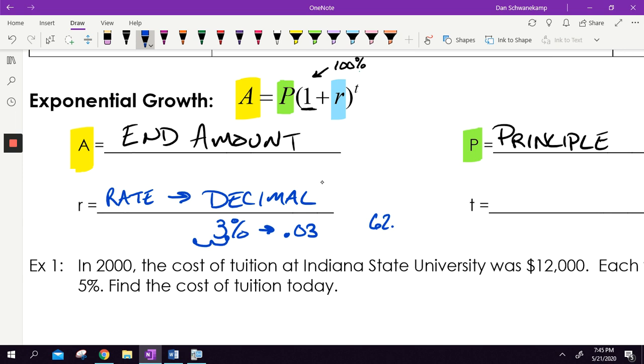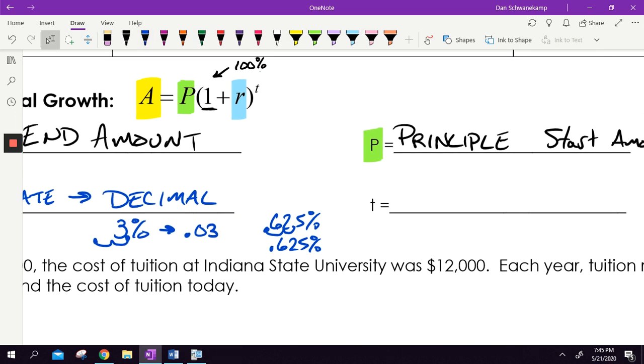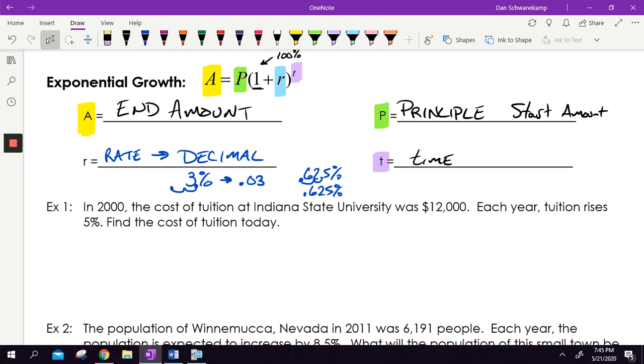So 3% when we do these problems, fill it in as 0.03. If you had like 62.5%, you would move it 1, 2. It would be 0.625. So just be aware of that. Make sure you write the rate as a decimal. And then the T is going to stand for time. T is time. Just kind of depends on whether it's years or months based on the problem. That's it. It's just a matter of plugging into your formula.